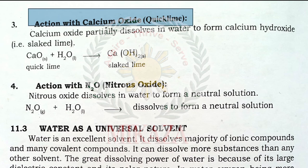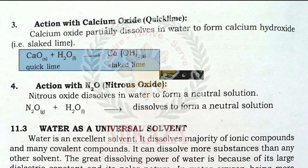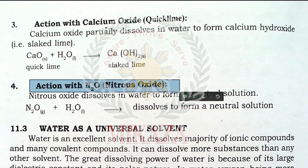Calcium oxide (quicklime) partially dissolves in water to form calcium hydroxide, which is slaked lime. It does not fully dissolve — some remains as powder. Nitrous oxide dissolves in water to form a neutral solution. It forms ammonium nitrate (NH₄NO₃), which is neither acidic nor basic — it is neutral.